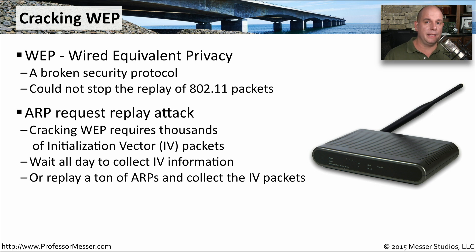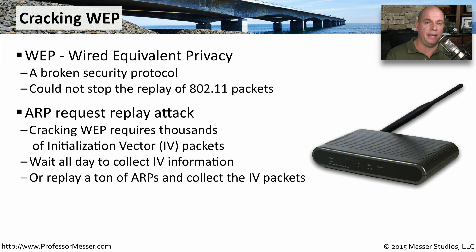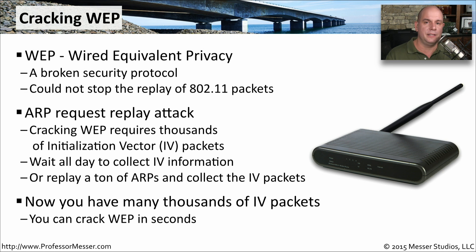One type of replay attack that worked in conjunction with the known cryptographic vulnerabilities of WEP is an ARP request replay attack. This attack sends out ARPs to see the responses, and those responses contain initialization vectors, or IVs. When you collect enough IVs, you can perform a cryptographic break of the WEP protocol. Rather than waiting to passively collect IVs, you can replay ARPs onto the wireless network and collect thousands of ARP responses and IV packets. Once you've collected all those packets, you can determine the WEP password in a matter of minutes — which is why we never use WEP today.